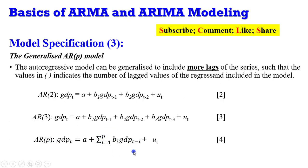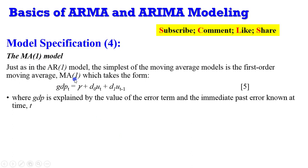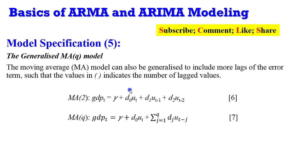Specifying a moving average process is not too different from an AR process. An MA(1) process using GDP as an example shows that GDP is explained by the current error term and the first lag of the error term at time T. Generalizing to an MA(Q) process: whatever value is in parentheses tells you the number of error term lags included, so MA(2) includes two lags, T minus one and T minus two, and MA(Q) includes Q lags.